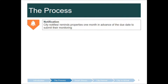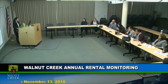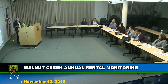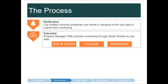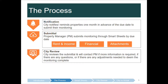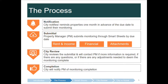I usually send properties a notification both by mail and email about one month in advance of the due date, saying it's coming up soon. The property managers submit the report — I break the submittal into three main sections: rent and income, financials, and attachments. The city then reviews all the submitted information. If there are any questions — and in the past there have been — I'll ask property managers to provide more information or clarification. Finally, when it's completed, I'll send you a completion confirmation via email.